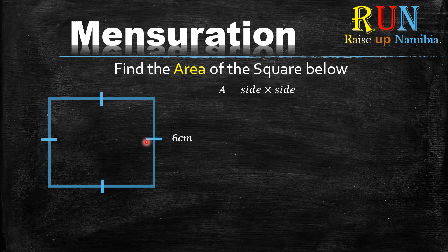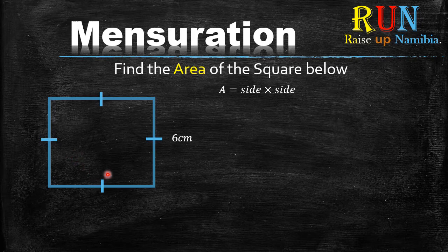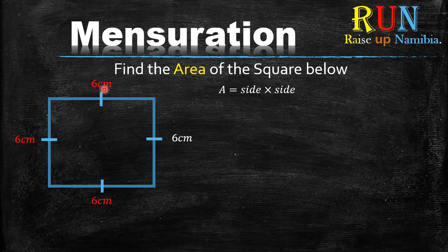Each of the other sides has one tick mark, meaning all the sides are equal. Since we are given that one side is six centimeters, this simply means all the other sides are also six centimeters.